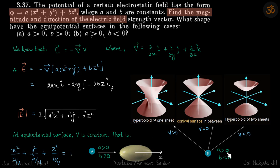And in the second case, if a is greater than zero but b is less than zero, we will have three different cases based on potential is greater than zero, equal to zero, or less than zero.